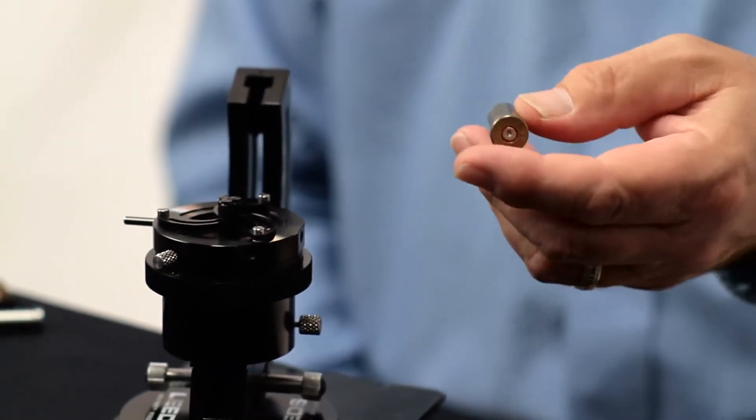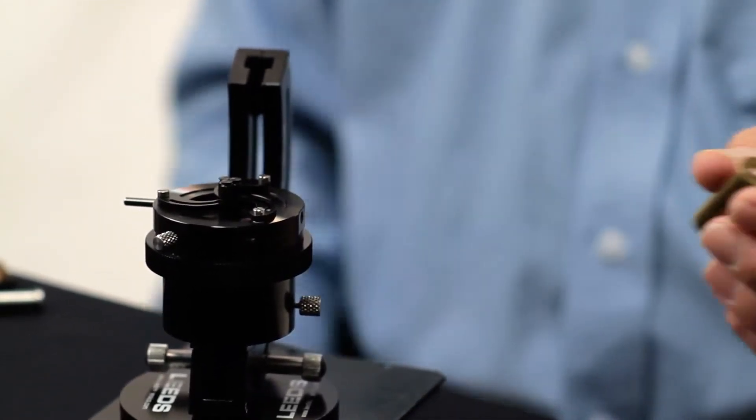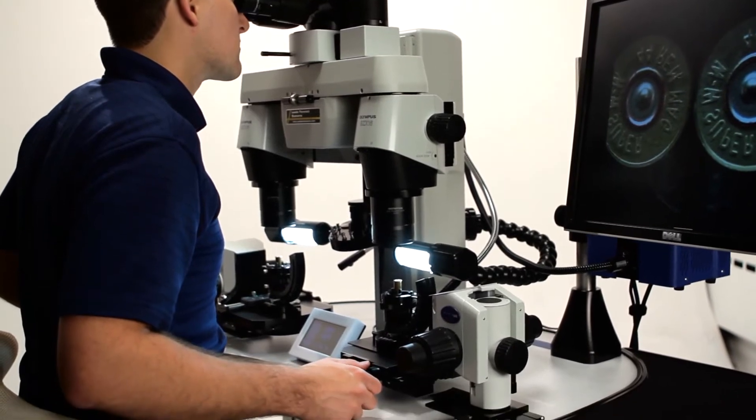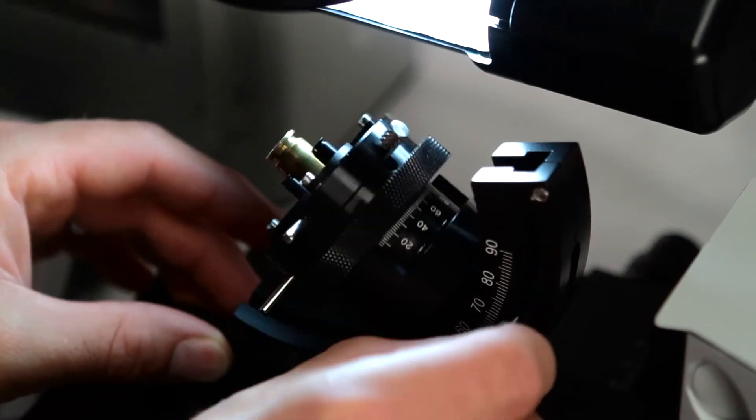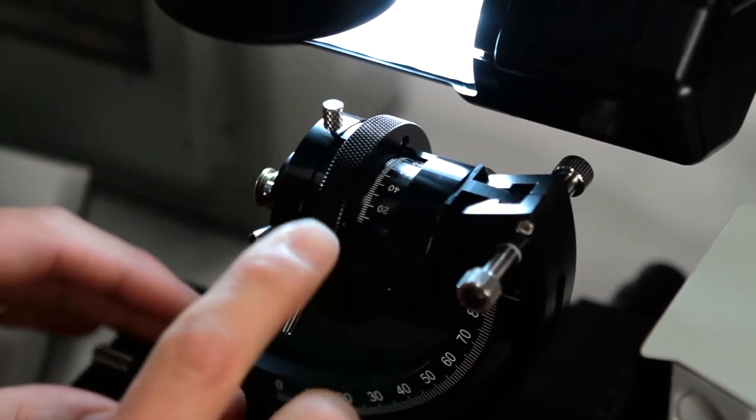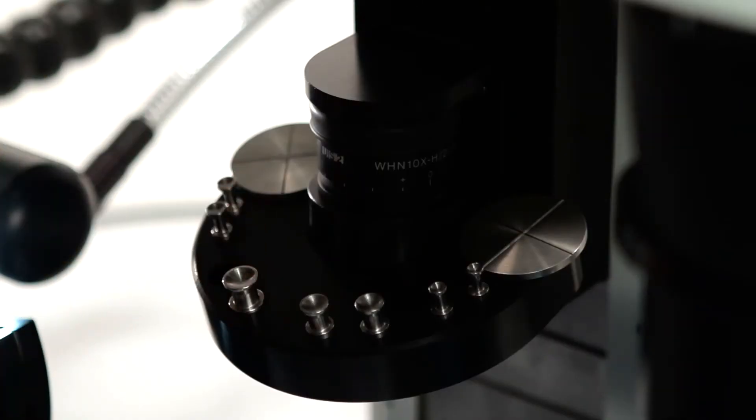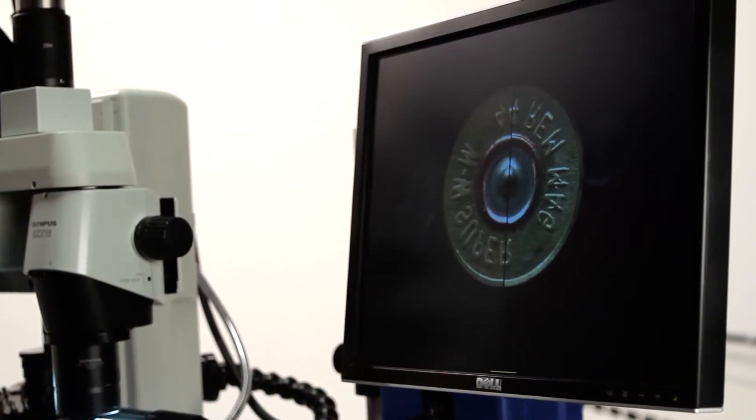The problem with those is that number one you need a whole series of different holders to be able to hold the different caliber cartridge cases that we see. So if you've happened to misplace just the one you need for your 9 millimeter cartridge case, you spend a fair amount of time looking for it.